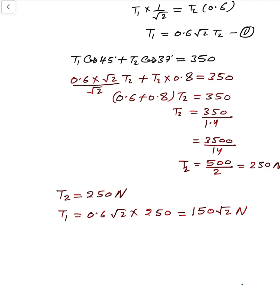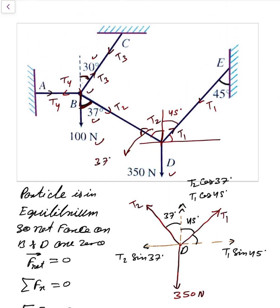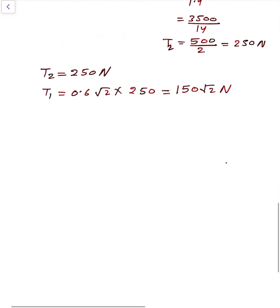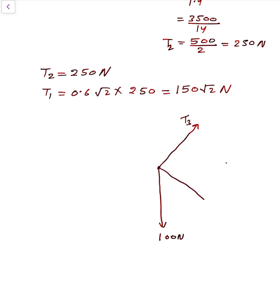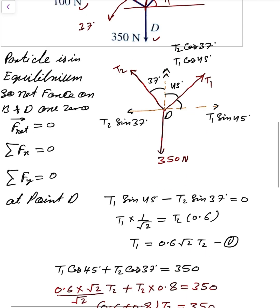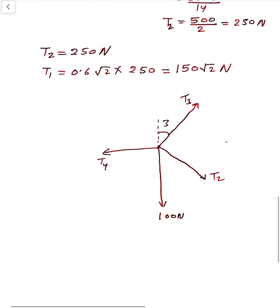Now focus on block B. Make the free body diagram of block B. The weight of block B is 100 N downward. T3 acts at 30 degrees, T2 acts at 37 degrees, and T4 acts horizontally. The angle for T3 is 30 degrees and the angle for T2 is 37 degrees.